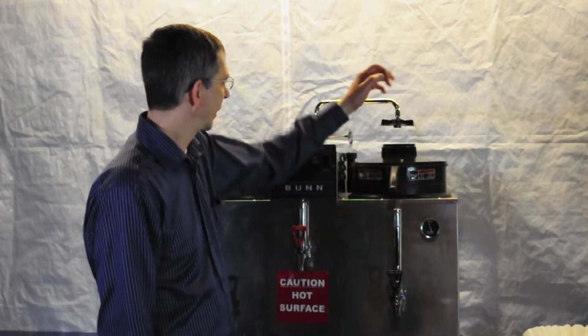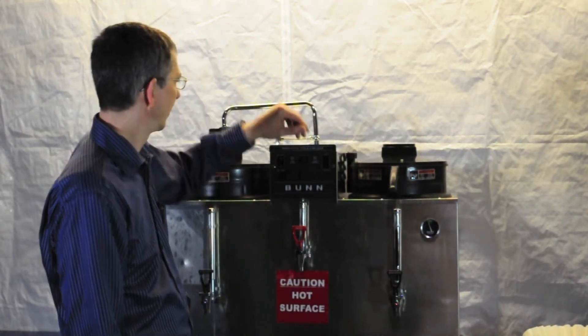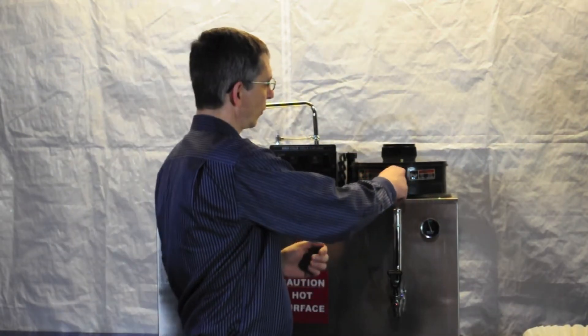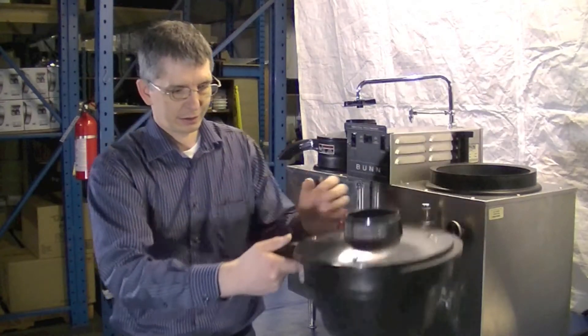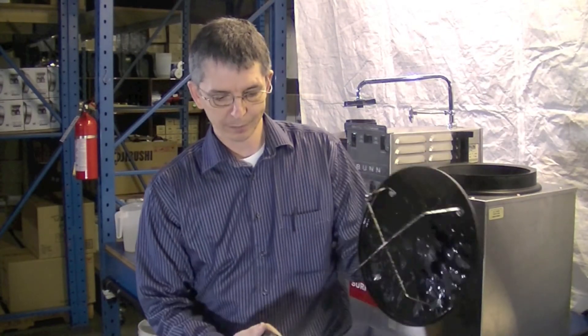Now that it's finished brewing, move the water swing arm away from the top of the funnel. Lift the funnel up, make sure there's no water dripping out of the bottom.